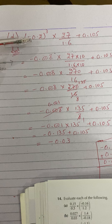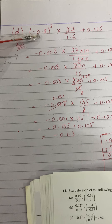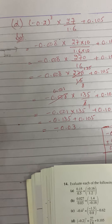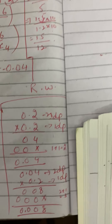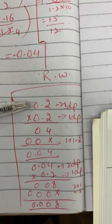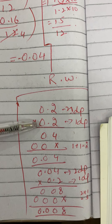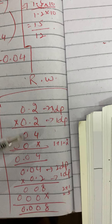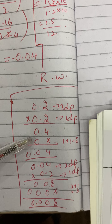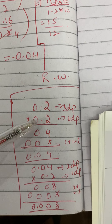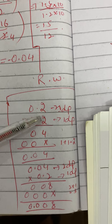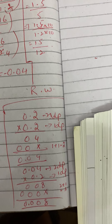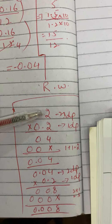First we multiply 0.2 into 0.2. Working it out: 2 twos are 4, 2 zeros are 0, 0 twos are 0, 0 zeros are 0. When we add them we get 004, and using the decimal places method we get 0.04.